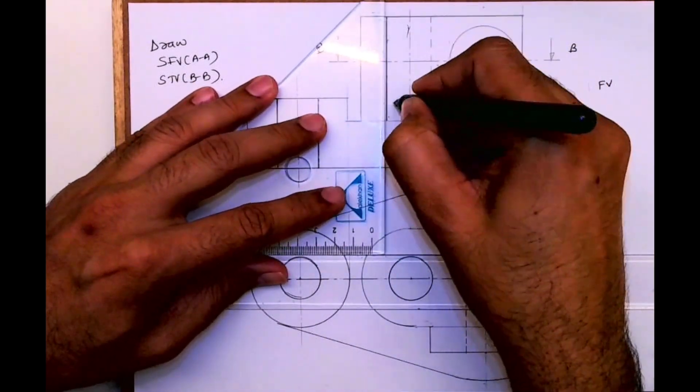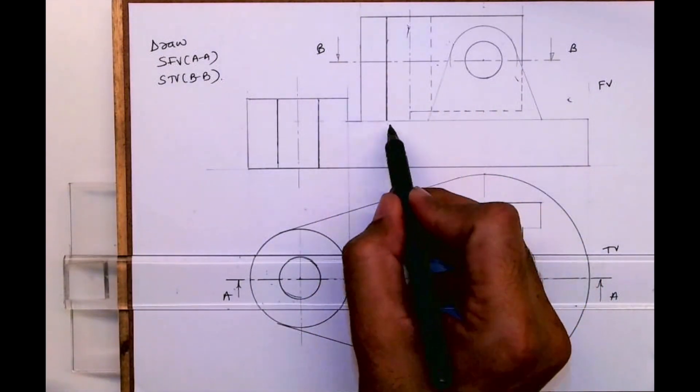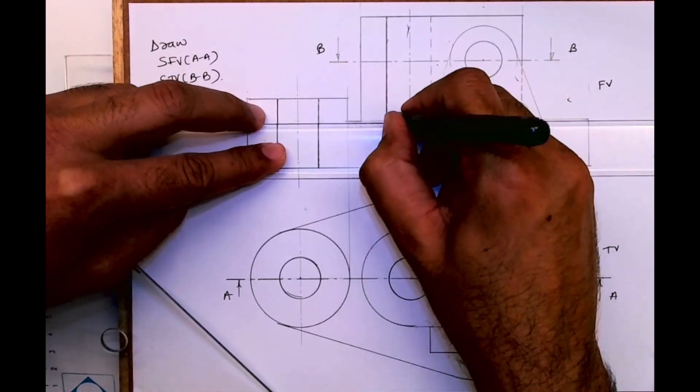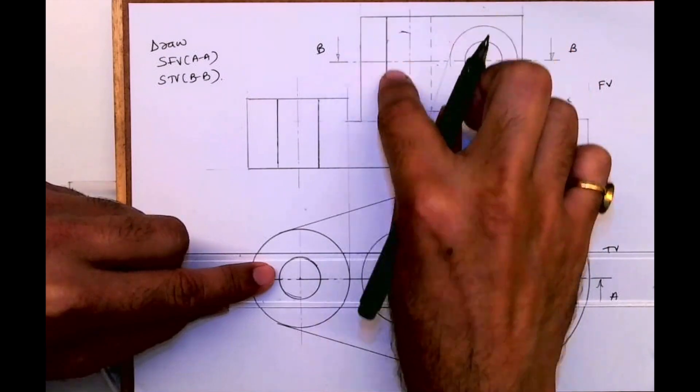If you see, this dotted is only till here, it is not through and through. Then this part will be dark because it's a circular hole part.